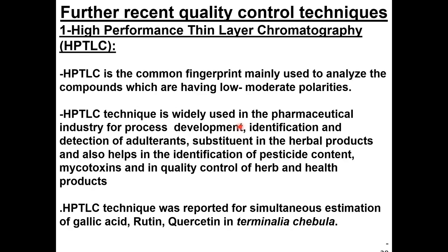The first quality control technique is high-performance thin-layer chromatography, HPTLC. This is a common fingerprinting technique used when the compounds possess low to moderate polarities. It was used in pharmaceutical industry particularly to detect adulteration, to unveil the presence of substituents, and to check the presence of compounds such as pesticides and mycotoxins. It was reported that HPTLC was used to simultaneously estimate gallic acid, glutin, corcetin, and Terminalia chebula.